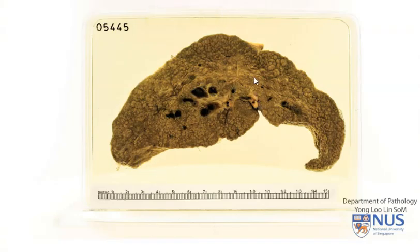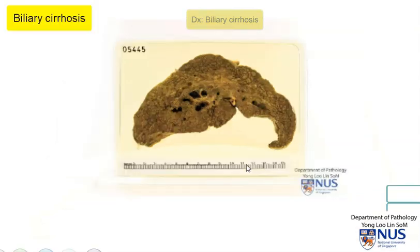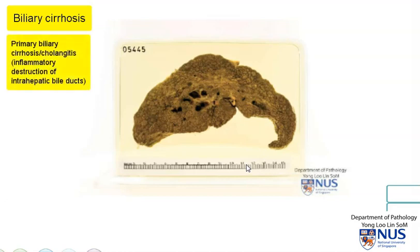This is an example of a cirrhotic liver with a greenish discolouration, and the diagnosis here is biliary cirrhosis. Biliary cirrhosis can be primary or secondary. Primary biliary cirrhosis is a condition that arises usually on a background of primary biliary cholangitis, where there is inflammatory destruction of the intrahepatic bile ducts.